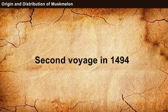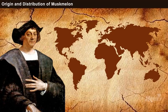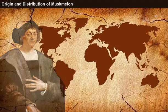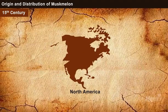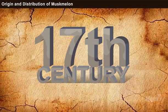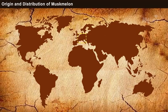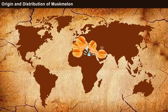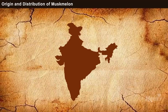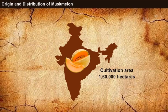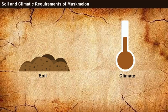During the second voyage in 1494, Columbus carried some muskmelon seeds from Egypt and planted them on Isabella Island. Later, at the end of the 15th century, muskmelon became popular across North America. During the 17th century, it was introduced in Central and Northern Europe. Over the years, muskmelon spread to almost all nations of the world. At present, India is one of the leading producers of muskmelon with a cultivation area of about 1,60,000 hectares.